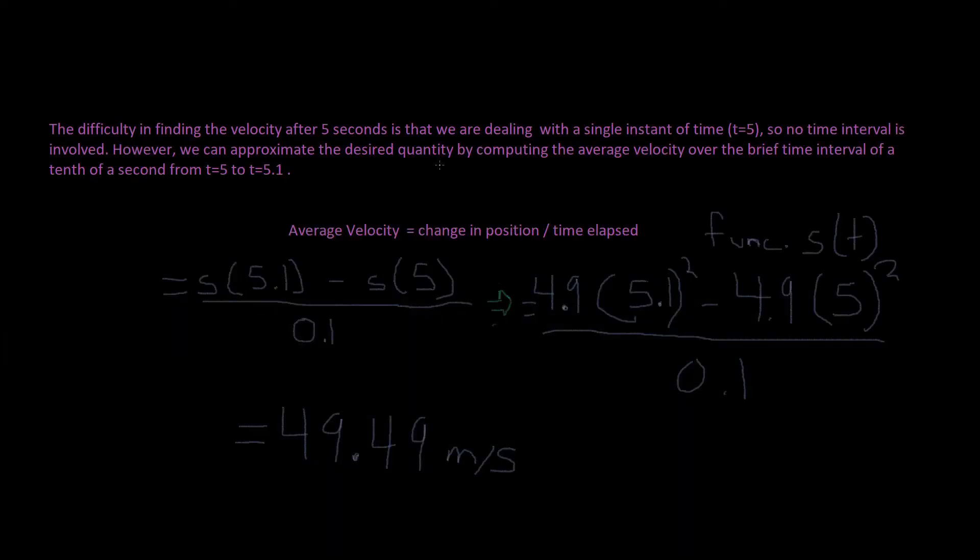The difficulty in finding the velocity after five seconds is that we are dealing with a single instant of time, t equals 5, so no time interval is involved. However, we can approximate the desired quantity by computing the average velocity over the brief time interval of a tenth of a second from t equals 5 to t equals 5.1.